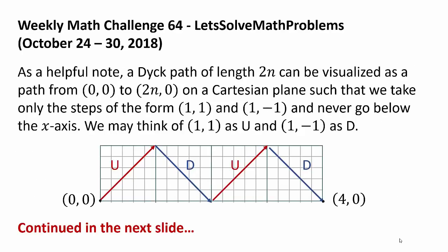As a helpful note, a Dyck path of length 2n can also be visualized as a path from (0,0) to (2n,0) on a Cartesian plane such that we take only the steps of the form (1,1) or U and (1,-1) or D and never go below the x-axis. So this diagram below illustrates UDUDUD.